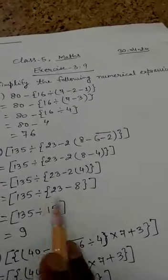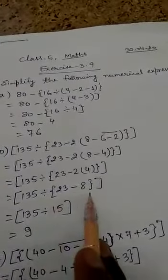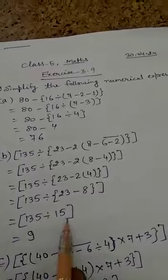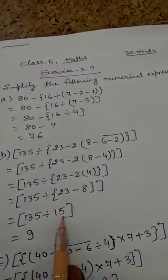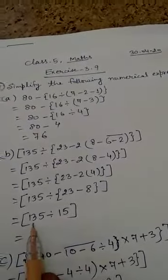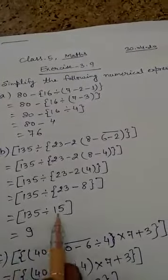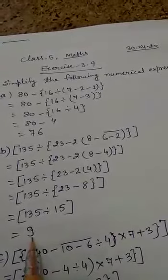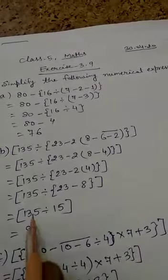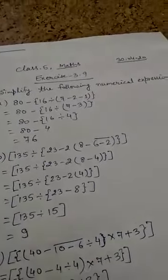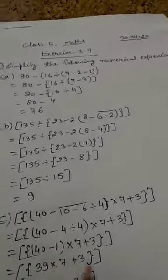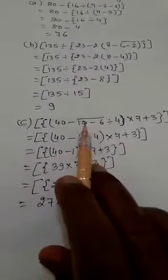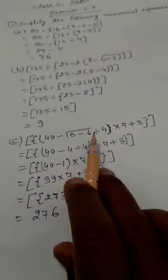Now in the next step, curly brackets are removed. Removing the big brackets also, we get 135 divided by 15 equals 9. So in this way, step by step, you will solve. It is very easy when you solve step by step.